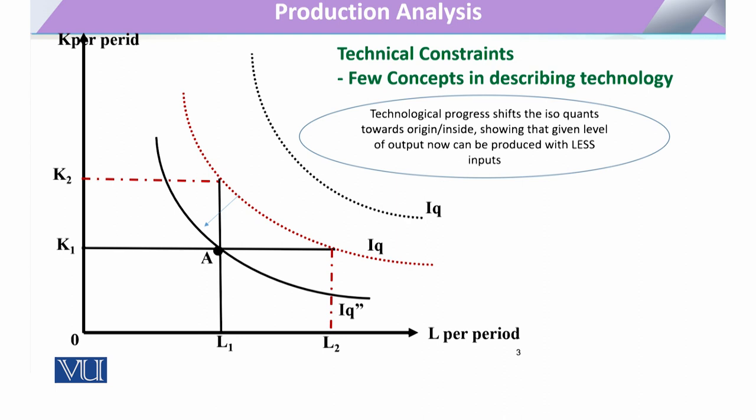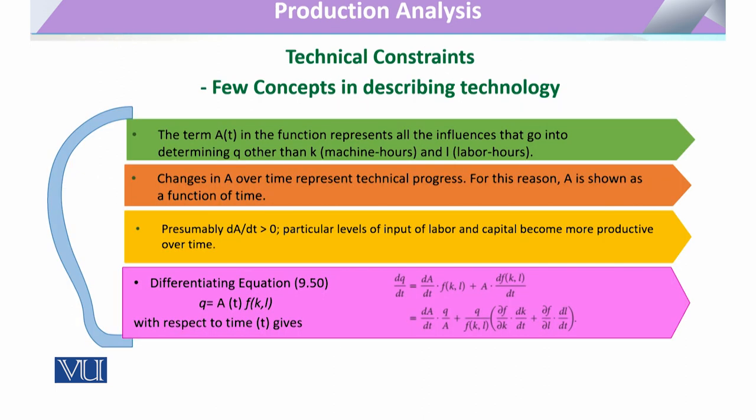Similarly, if we get more efficient fuel and look at the same level of production efficiency, we can say that there is technical progress — achieving the same level of output with fewer or more efficient inputs.